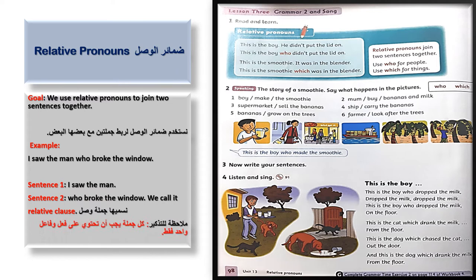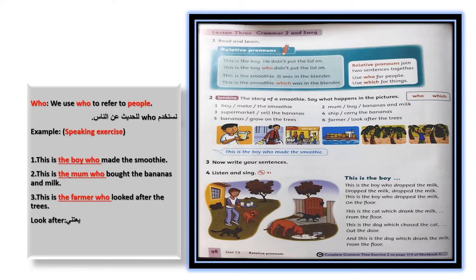Now, before we go to 'who,' let's note that every sentence has a subject. We use 'who' to refer to people. For example — sentence 1: 'This is the boy who made the smoothie.' Sentence 2: 'This is the mom who bought the bananas and milk' — this is the mother who bought the bananas and milk.